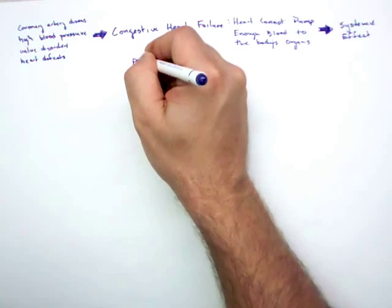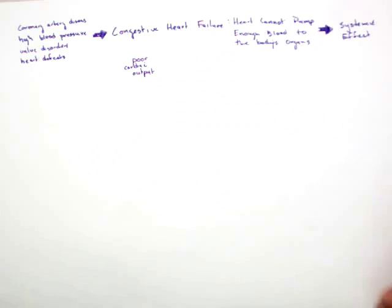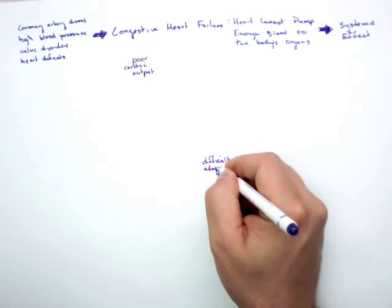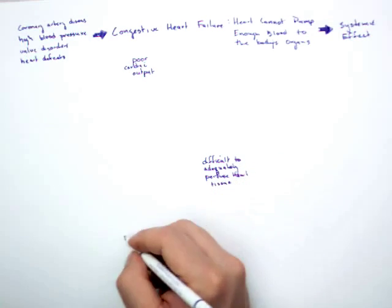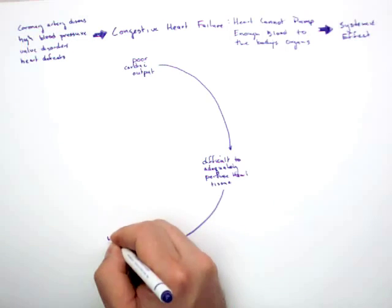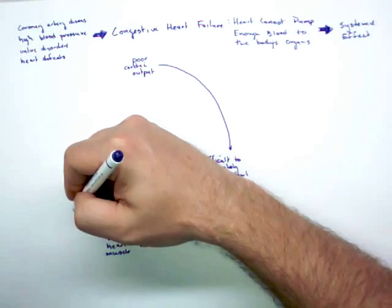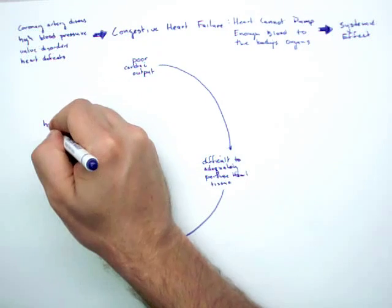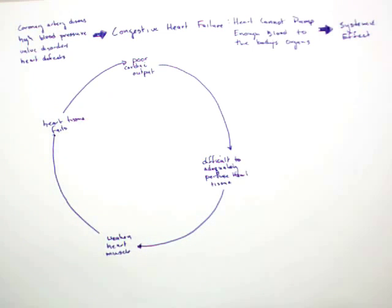It's going to start with poor cardiac output. This obviously means it's going to be difficult to adequately perfuse heart tissue. This is going to weaken heart muscle, which is going to cause heart tissue to fail. This obviously leads to poor cardiac output. So hopefully immediately you're seeing that this is a cyclic effect.